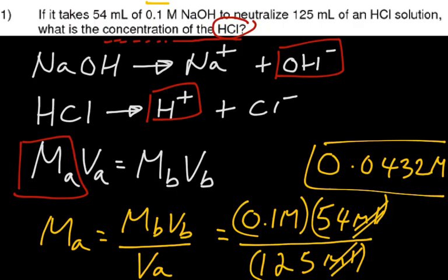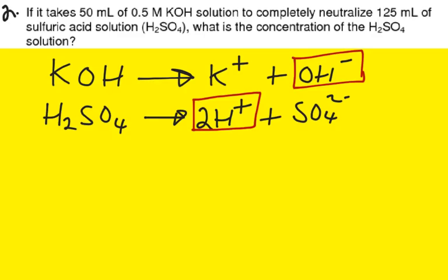We will use the number sign equation, modified titration equation, which says number sign A times MaVa equals to number sign B times MbVb.